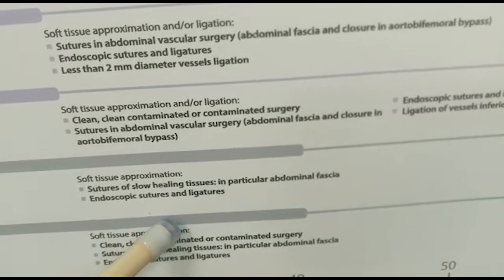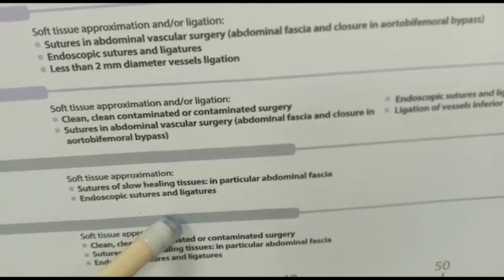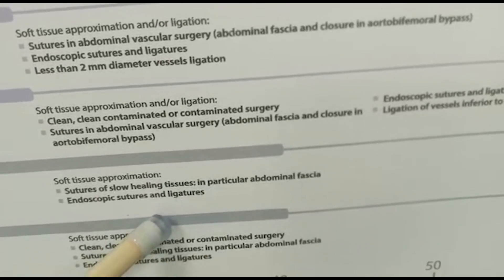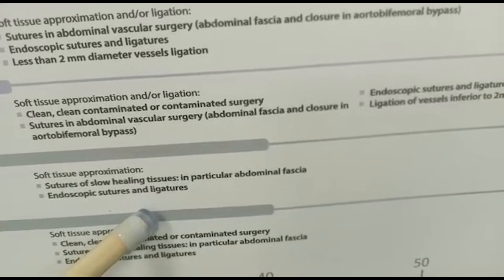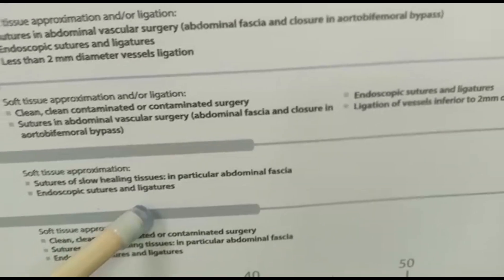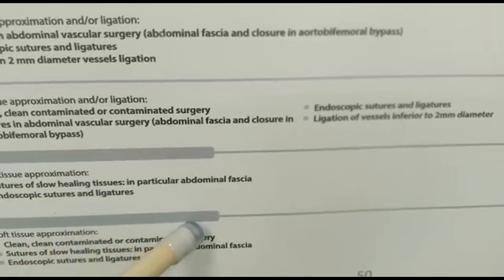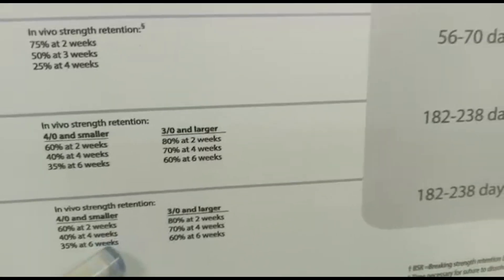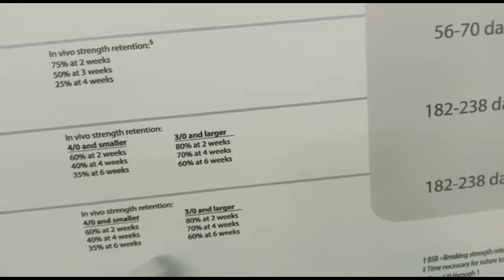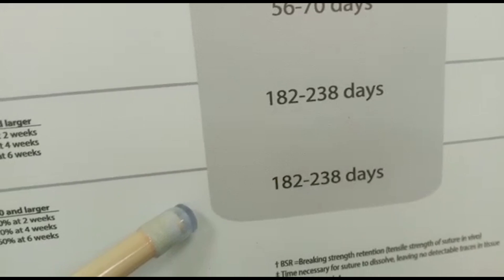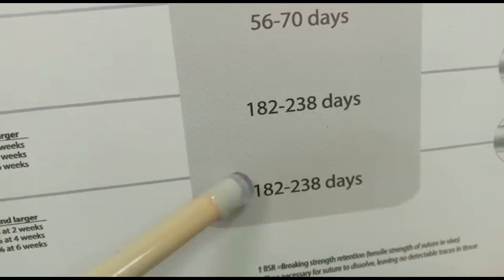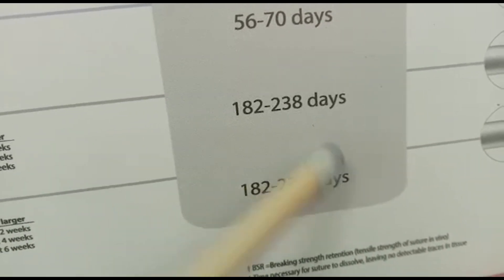PDS is preferred for malnourished patients because the tensile strength lasts longer — tissues in malnourished patients take longer to heal, so PDS is a good suture selection for them. It can hold tissues for four to six months, and complete absorption in the body takes 182 to 238 days.